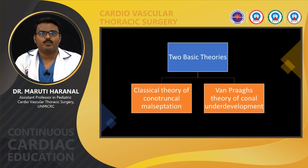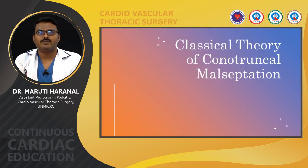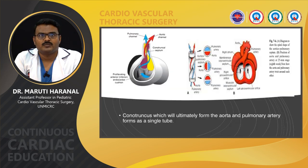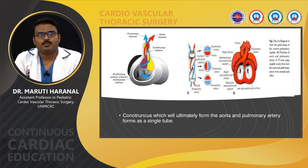Two basic theories have been proposed to describe the embryology of DORV: Lev's classical theory of conotruncal malseptation and Wanprace's theory of conal underdevelopment. In Lev's theory, the conotruncus is a single tube which ultimately gives rise to the great vessels — the aorta and pulmonary artery. A process of spiral septation divides the conotruncus into two great arteries, which wrap around each other as shown in the diagram.